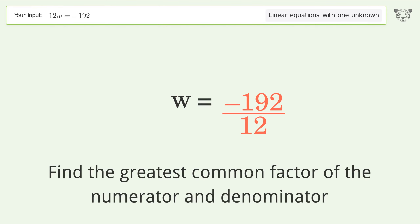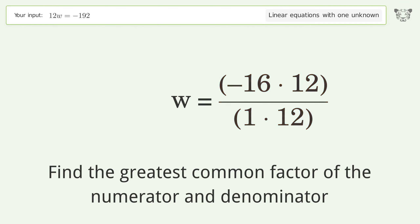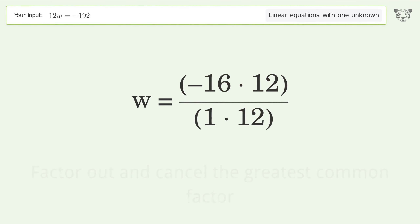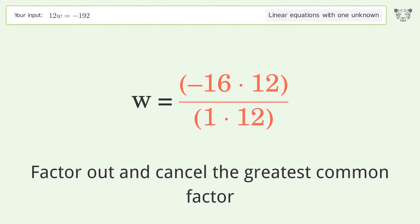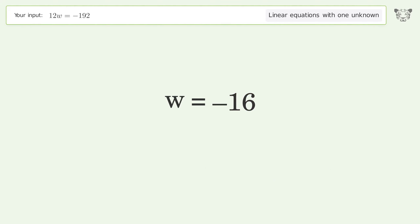Find the greatest common factor of the numerator and denominator. Factor out and cancel the greatest common factor. And so the final result is w equals negative 16.